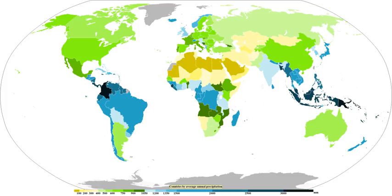A temperature profile showing a warm layer above the ground is most likely to be found in advance of a warm front during the cold season, but can occasionally be found behind a passing cold front.